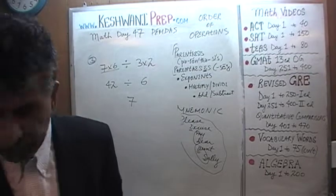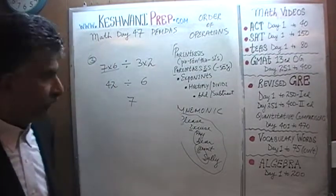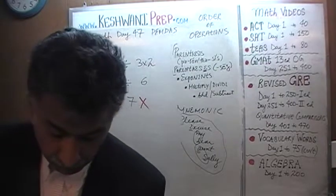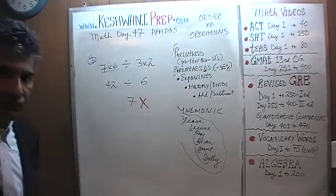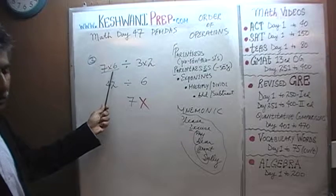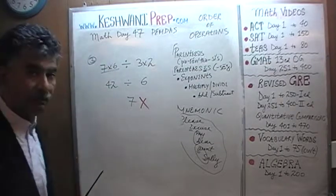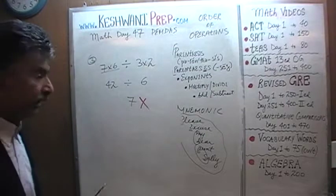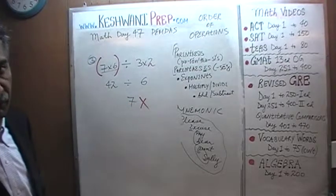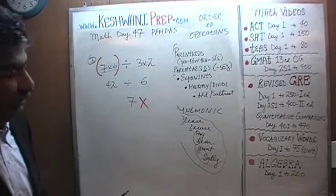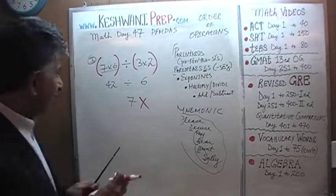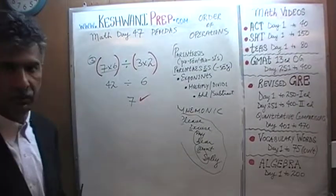This answer would have been correct only if we had parentheses — around (7 times 6) and around (3 times 2) — treating each as a quantity in itself. The only way to justify doing 7 times 6 first as one quantity is when there is a parenthesis around it. Similarly for 3 times 2. If we had parentheses around both, then the answer of 7 would be correct. But that is not what we were given.